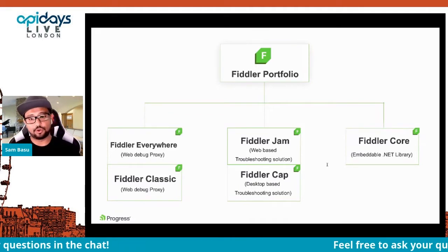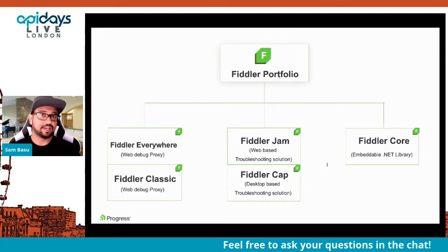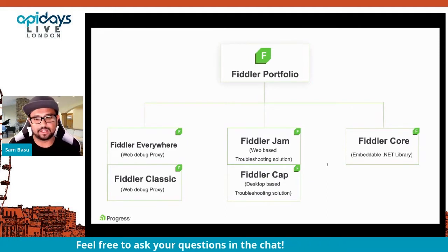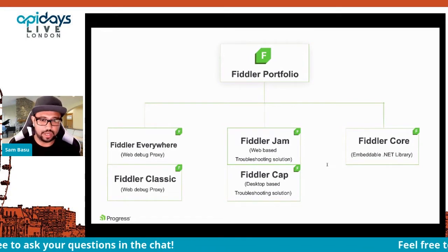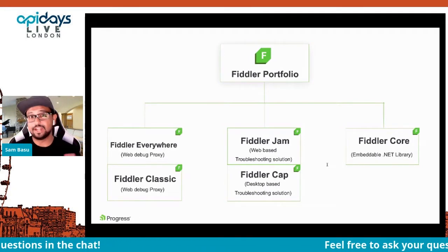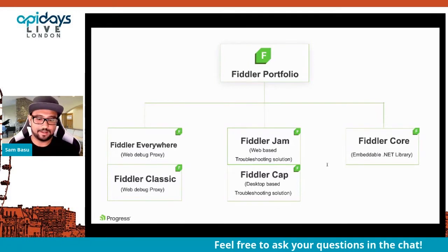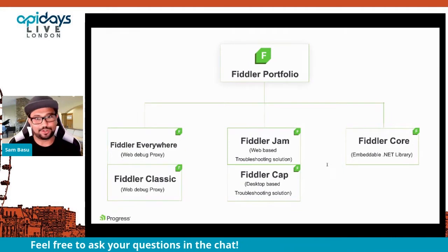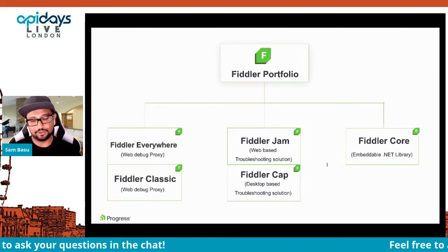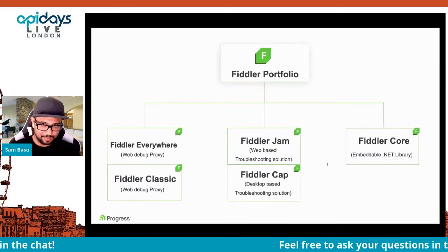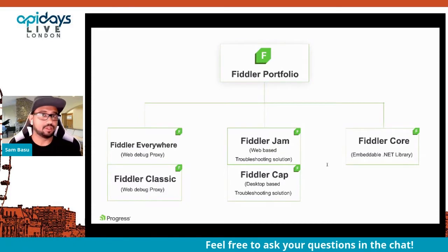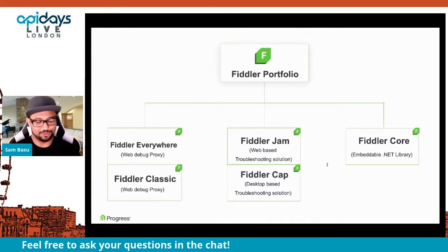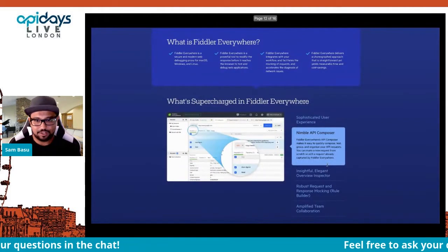Fiddler Core is the engine you can embed inside your own apps if you want to build a dashboard and give users that visibility. Fiddler Cap and Fiddler Jam are meant for end users — because no matter how much we try, we're not shipping perfect software, and users say 'this just doesn't work on my machine.' Your support teams need that visibility before bugs get triaged all the way to your dev team.